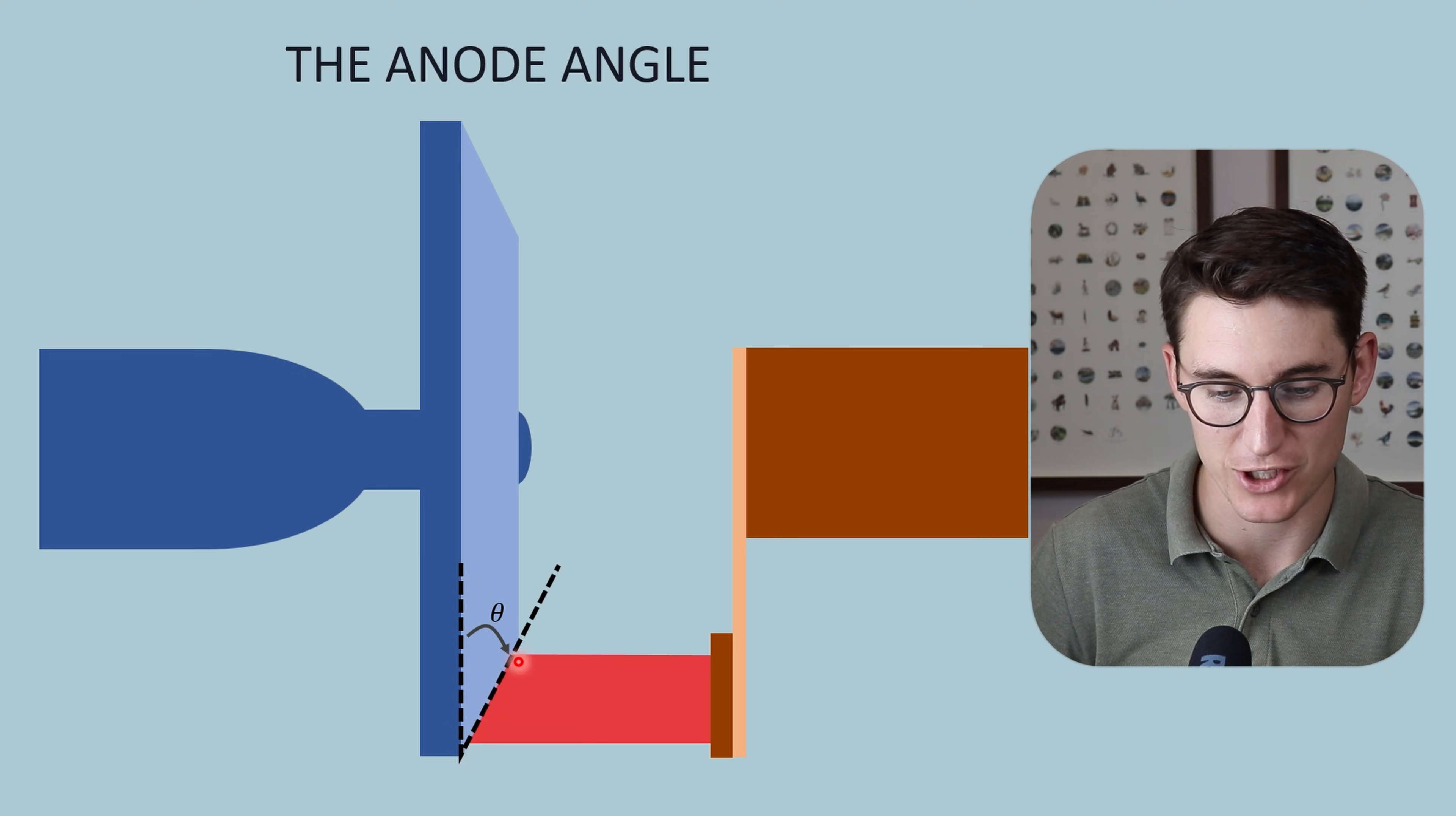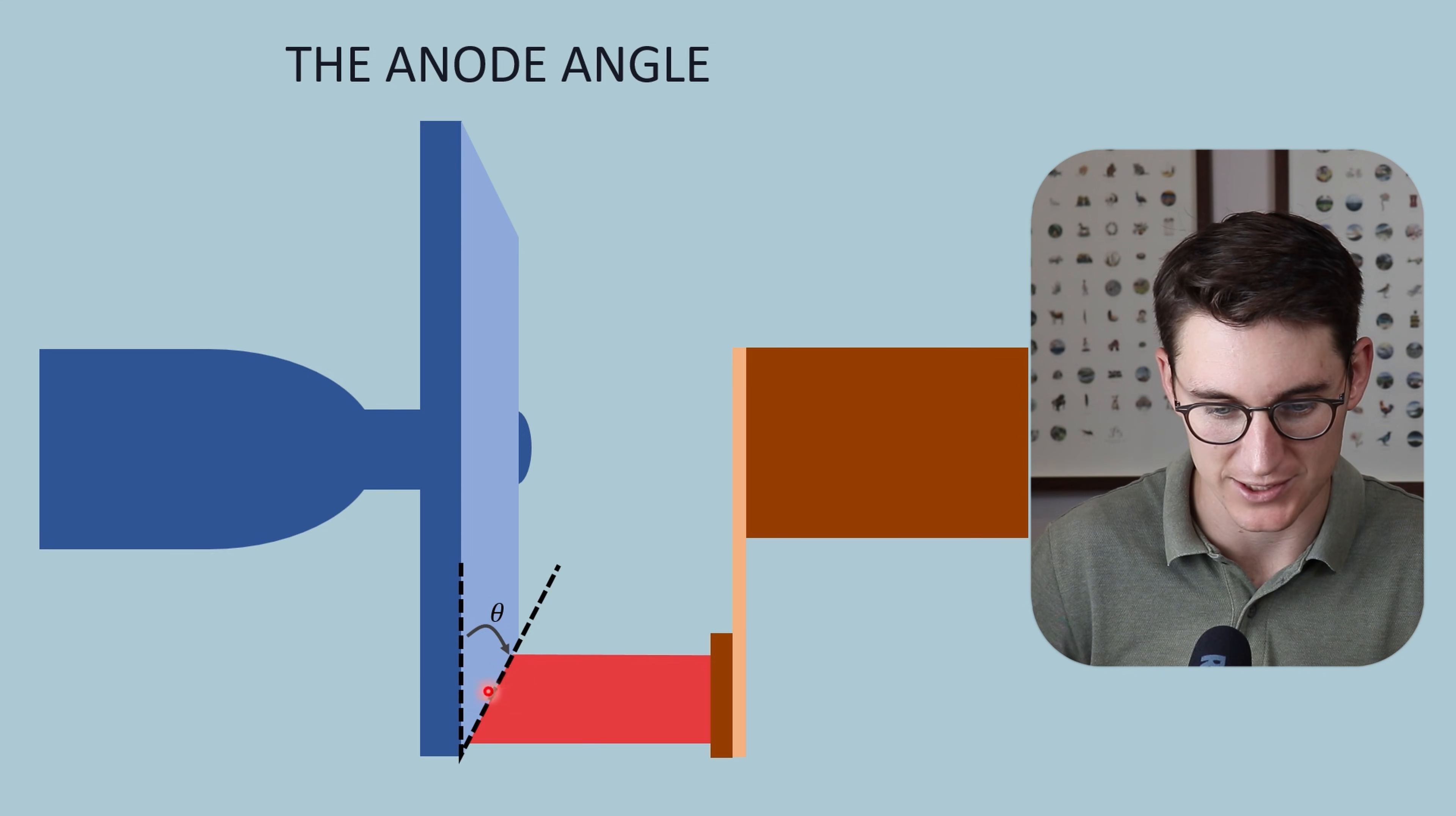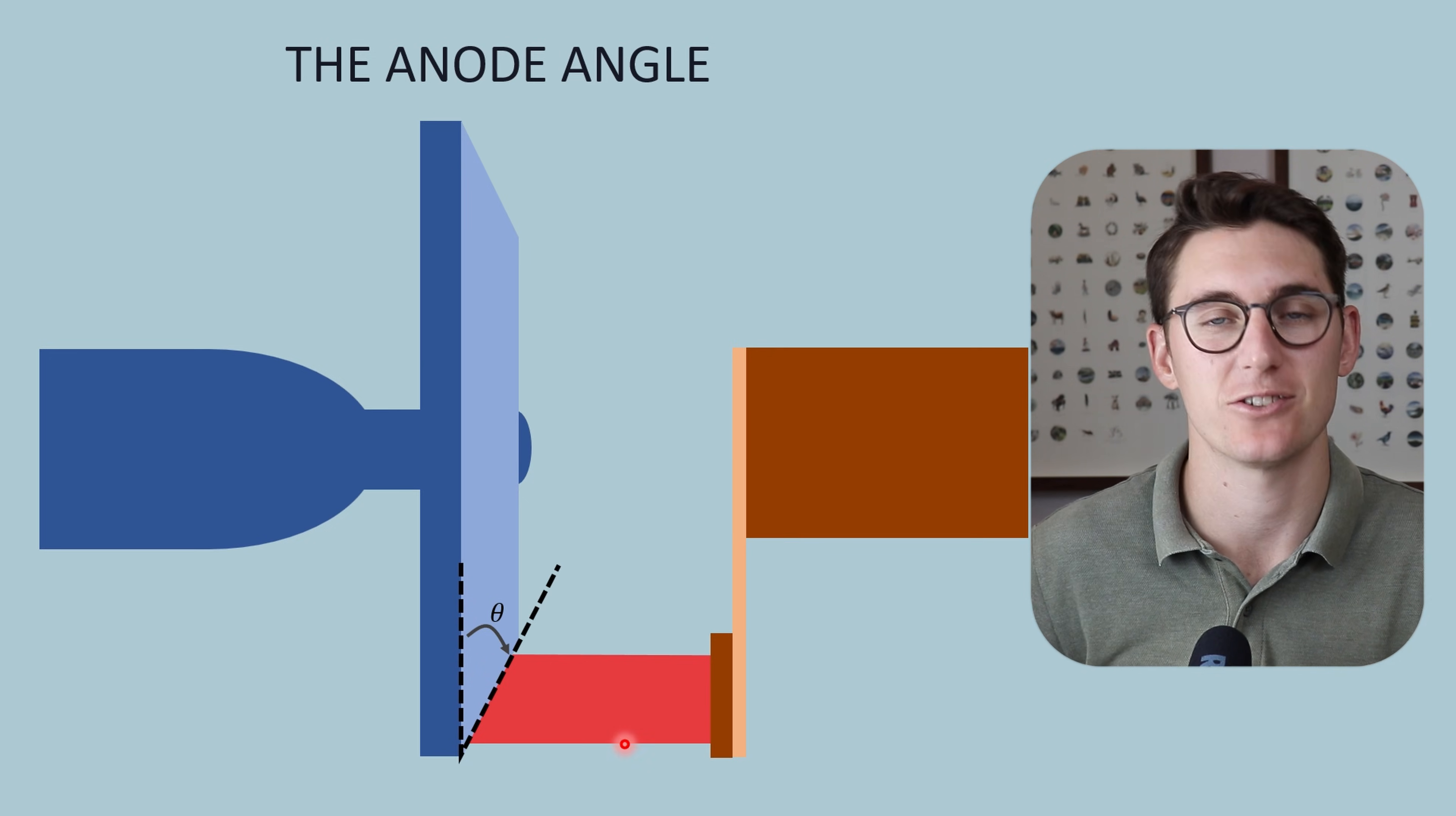Some textbooks will measure the angle here on the anode itself. Other texts will draw a line down from the anode and measure this angle. Those angles are the same, as long as these two lines are parallel.